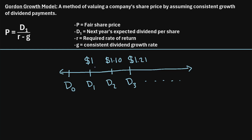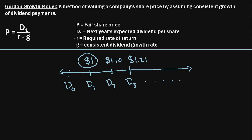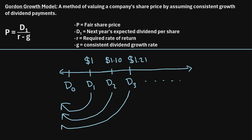When considering what a fair share price would be for this company, we're saying let's consider all of these dividends we're going to receive in the future. We know that the present value of each of these dividends will be less than their future values. So this $1 one year from now, we need to discount that dividend back to the present day. Similarly, we need to discount the dividends from year two and year three back to the present. The idea is to come up with a fair share price, let's call it P, by taking the sum of the present value of all future dividends.